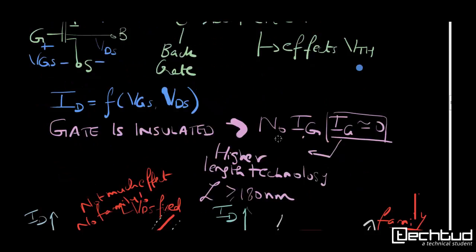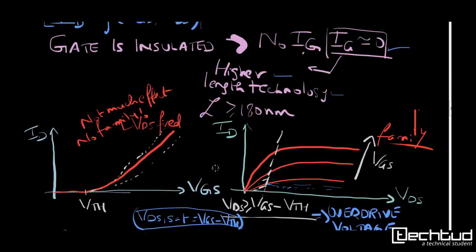In general case, we assume that VGS and VDS will control the ID current. IG in this case we assume to be zero—that is, gate is insulated. This terminology is suitable for higher length technology when L is greater than 180nm. For lower length technology, however, we have switching currents from gate. That is very high values, so we cannot ignore in that case. But for higher length technology, we can say that IG is zero.